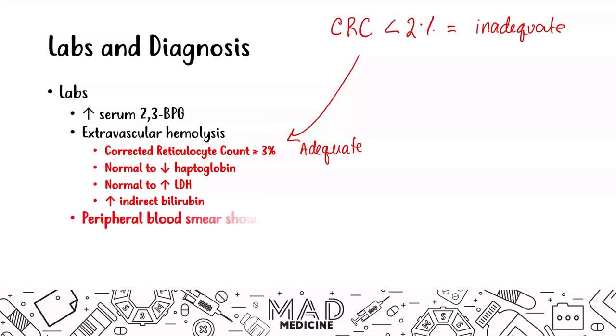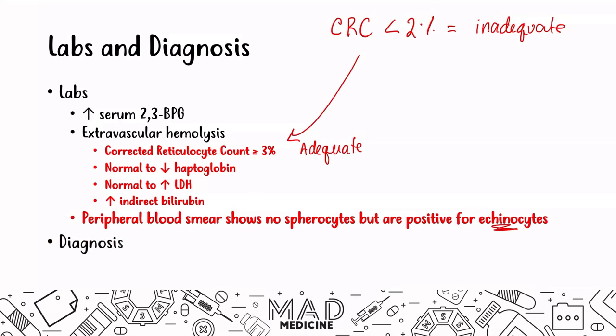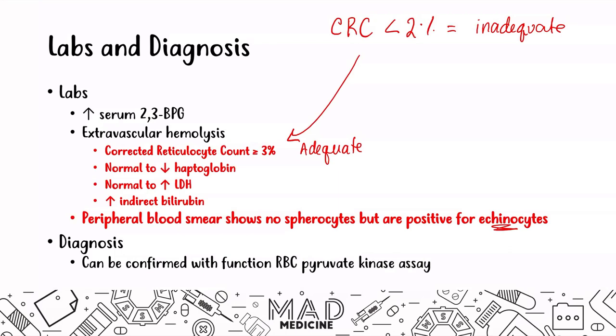The peripheral blood smear is going to show no spherocytes, but it will be positive for echinocytes. Echinocytes are mainly associated with pyruvate kinase deficiency — a very important association. The diagnosis can be confirmed with an RBC pyruvate kinase assay, where you measure the amount of pyruvate kinase in the red blood cells to determine whether or not the patient has a deficiency.